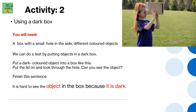Activity 2: Using a dark box. You will need a box with a small hole in the side and different colored objects. We can do a test by putting objects in a dark box. Put a dark colored object into the box, put the lid on, and look through the hole. Can you see the object? Finish the sentence: It is hard to see the object in the box because it is dark.